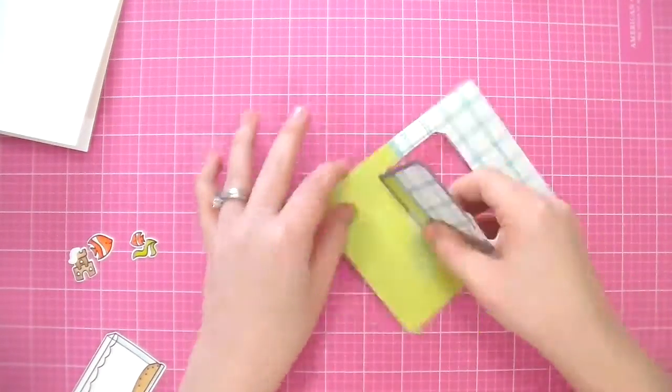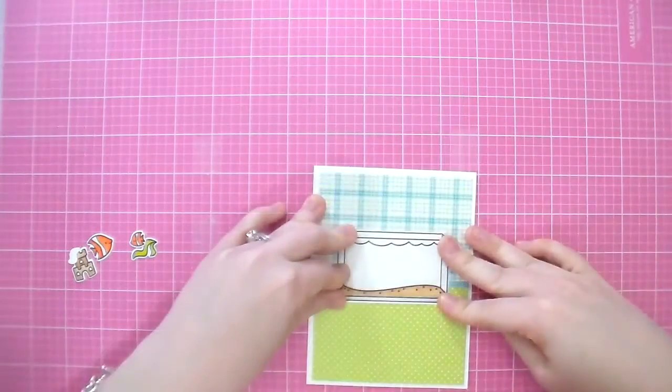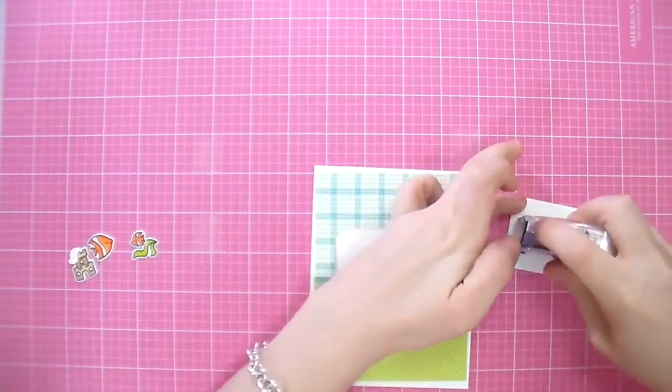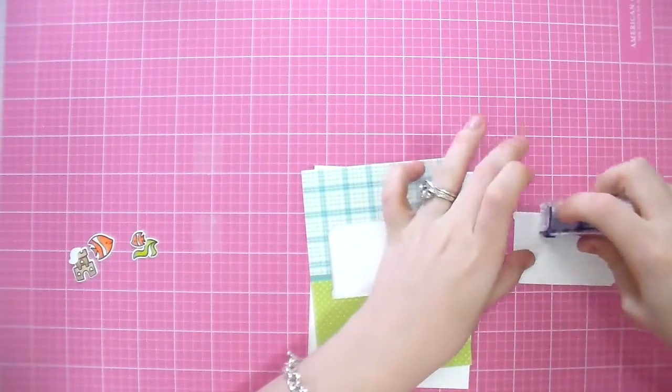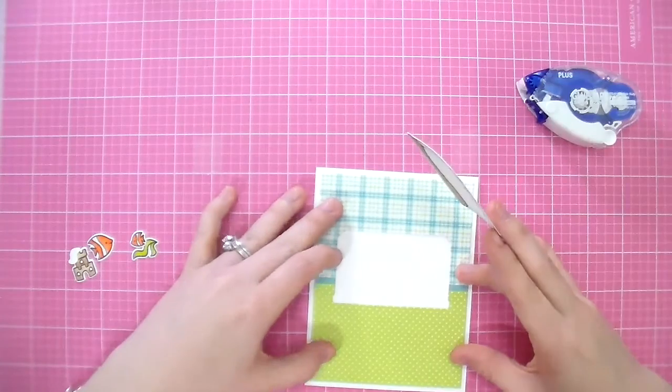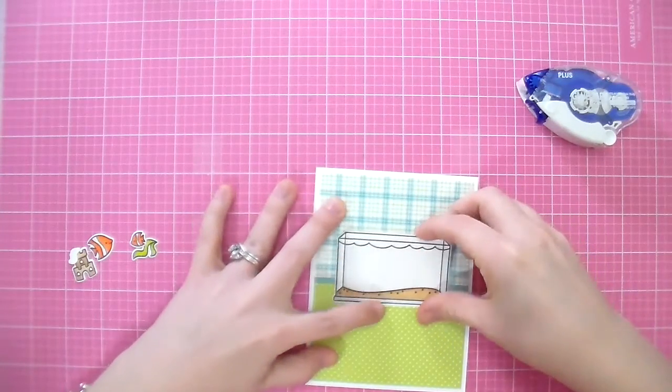So I cut the fish tank out of the background paper. And now I'm taking my fish tank and lining it up with the paper and gluing it down. That way there's no guessing on where it should be on the background.